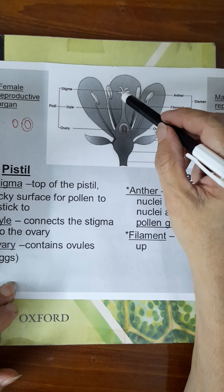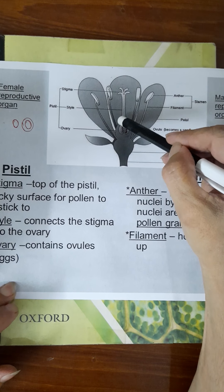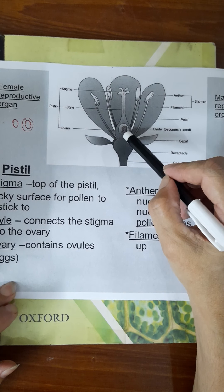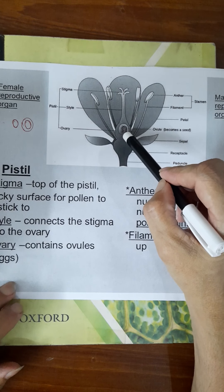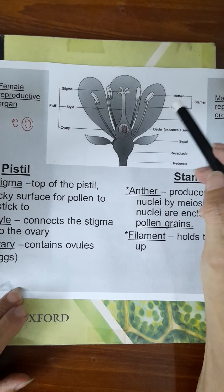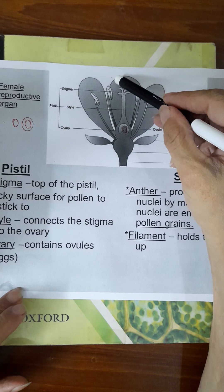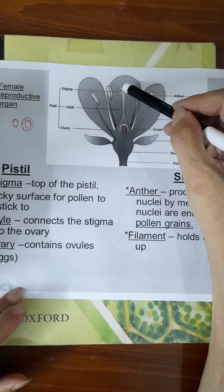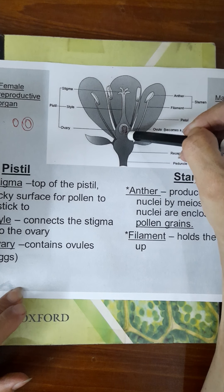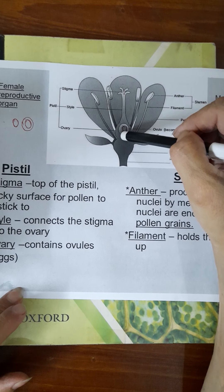The female part, called the pistil or carpel, consists of three parts: stigma, style and the ovary. The ovary contains ovules which have the female cells. In pollination, the pollen grains containing the male cells fall on the stigma of the pistil, go deep inside through the style and reach the ovary, where the egg cells or female cells fuse with them.